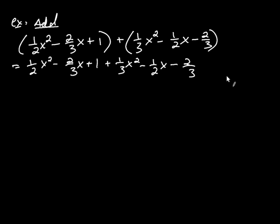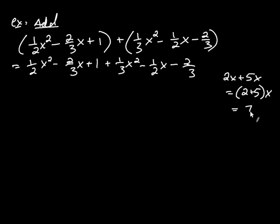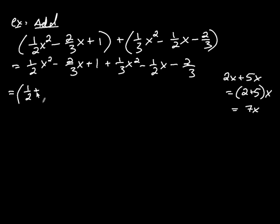If someone gave you 2x plus 5x, you'd know right away that's 7x. You're adding the coefficients 2 and 5, then multiplying by x. We'll take the same approach with fractions. I'm going to put the coefficients in parentheses and place the variable on the outside, so I can focus on adding the fractions. So it's going to be parentheses one-half plus one-third, times x squared.